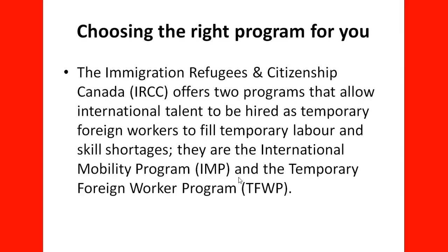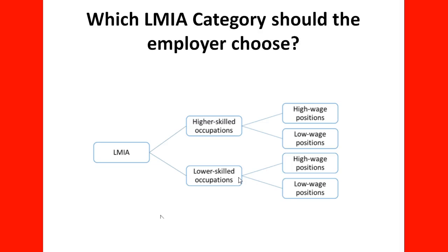For the employer, it is important to choose the right program. Immigration, Refugees, and Citizenship Canada (IRCC) offers two programs that allow international talent to be hired as temporary foreign workers to fill temporary labor and skill shortages: the International Mobility Program (IMP) and the Temporary Foreign Worker Program (TFWP). In cases where an LMIA is needed, the employer must choose the category in which they will apply.